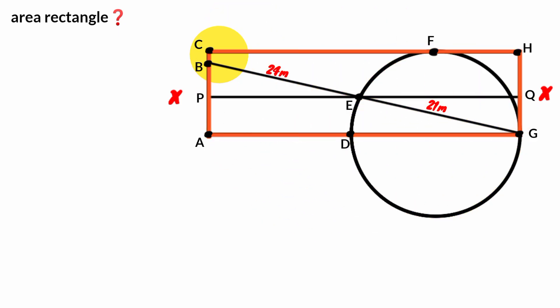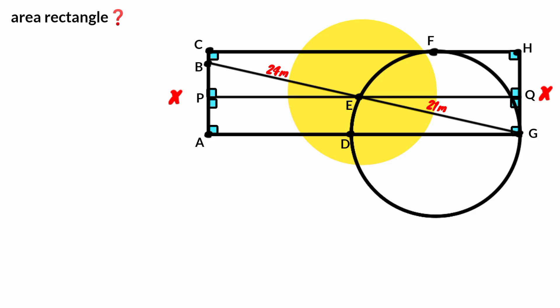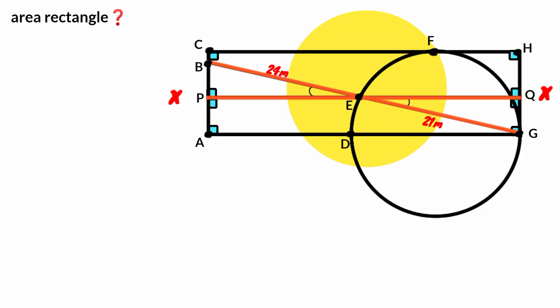Therefore, this angle, this, this, and this are right angles. Since this line is parallel to this side, this angle and this are going to be 90 degrees each. Here we see this angle and this are formed by two straight lines intersecting — that is, they are vertically opposite angles.